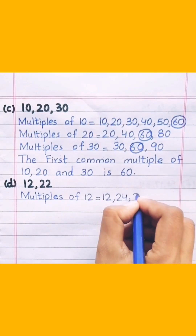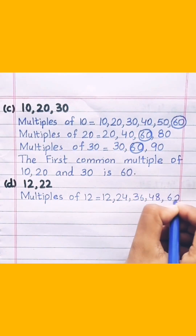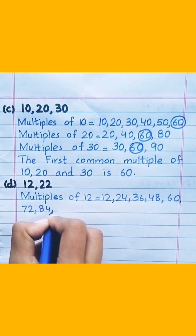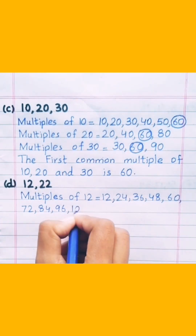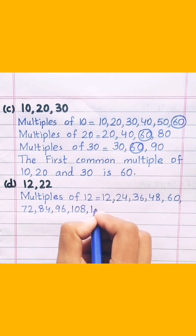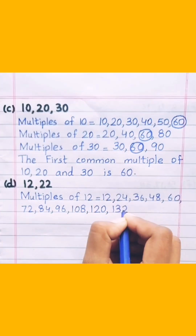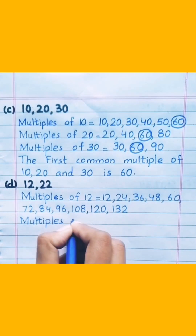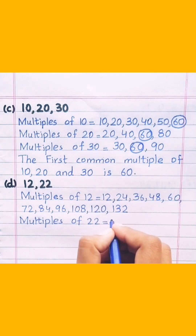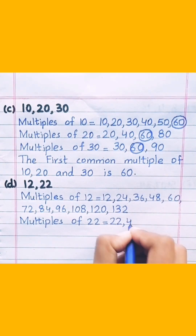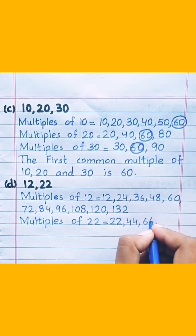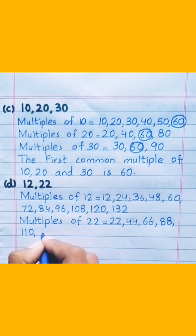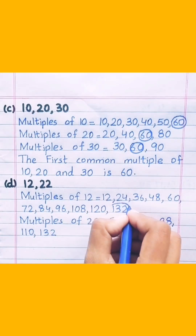Multiples of 12: 12, 24, 36, 48, 60, 72, 84, 96, 108, 120, 132. Multiples of 22: 22, 44, 66, 88, 110, 132.